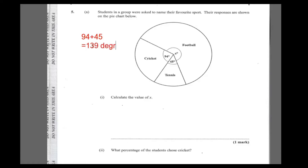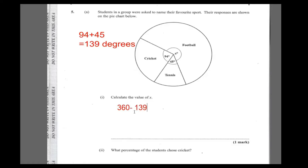That's 139 degrees. So what we're saying is: the total angle in a circle is 360 degrees, minus the 139. So 360 minus 139 gives us 221 degrees, and that is the value of x.